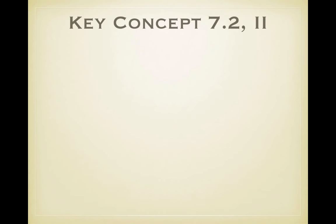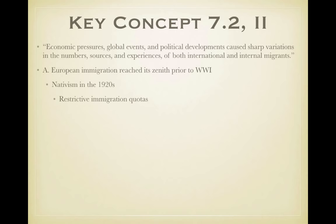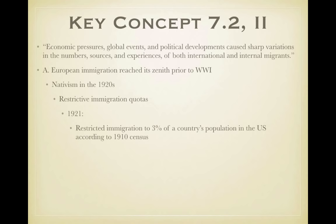Key concept 7.2 Roman numeral two states: economic pressures, global events, and political developments caused sharp variations in the number, sources, and experiences of both international and internal migrants. Prior to World War One, European immigration reached its zenith, giving rise to nativism in the 1920s and restrictive immigration quotas. In 1921, the Emergency Quota Act restricted immigration to three percent of a country's population in the U.S. according to the 1910 census.